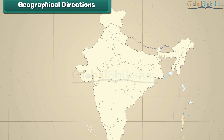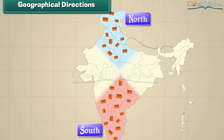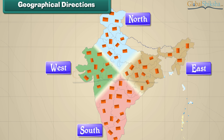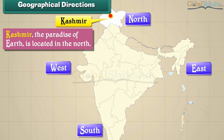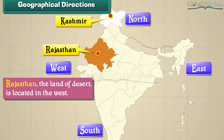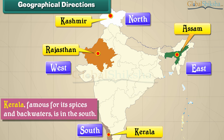People live at different places in India. Some places are in the north while some others are in the south. Some places are located on the east and some others are on the west. Kashmir, the paradise of earth, is located in the north. Rajasthan, the land of desert, is located in the west. Assam, known for its tea and wildlife, is located in the east. Kerala, famous for its spices and backwaters, is in the south.